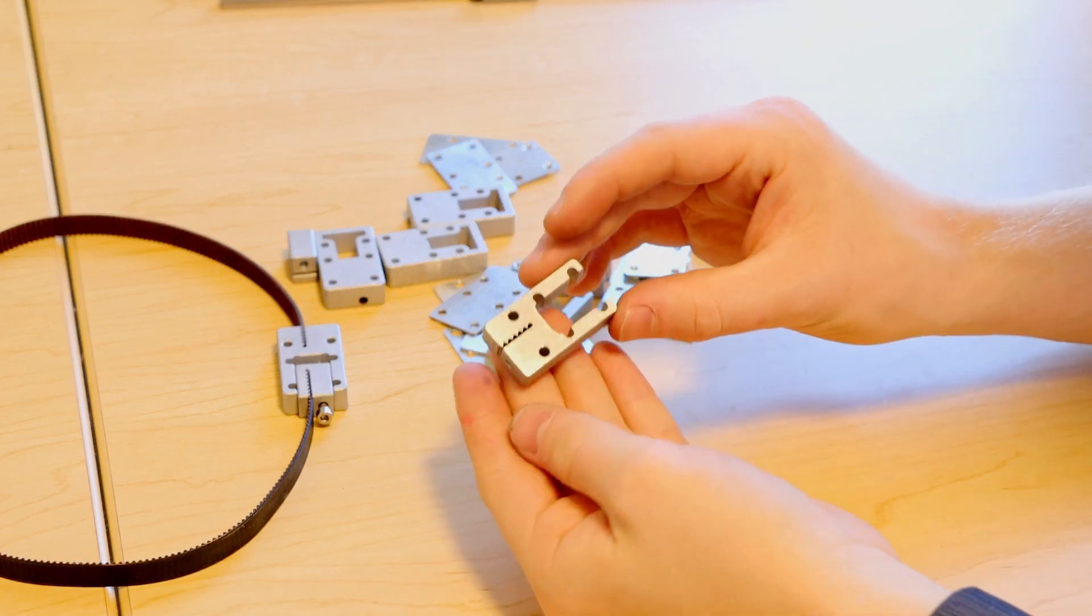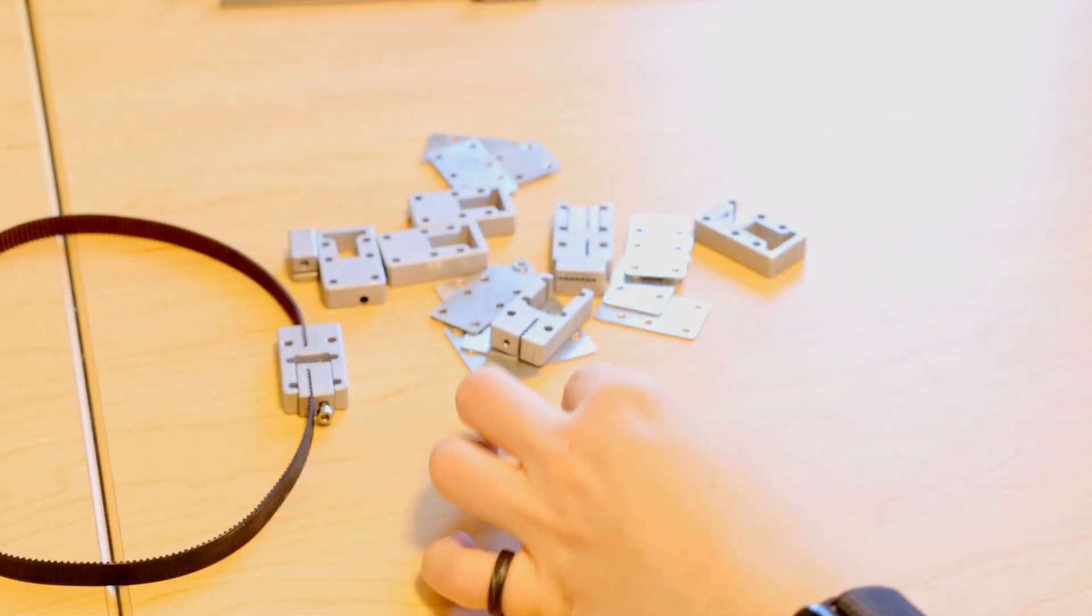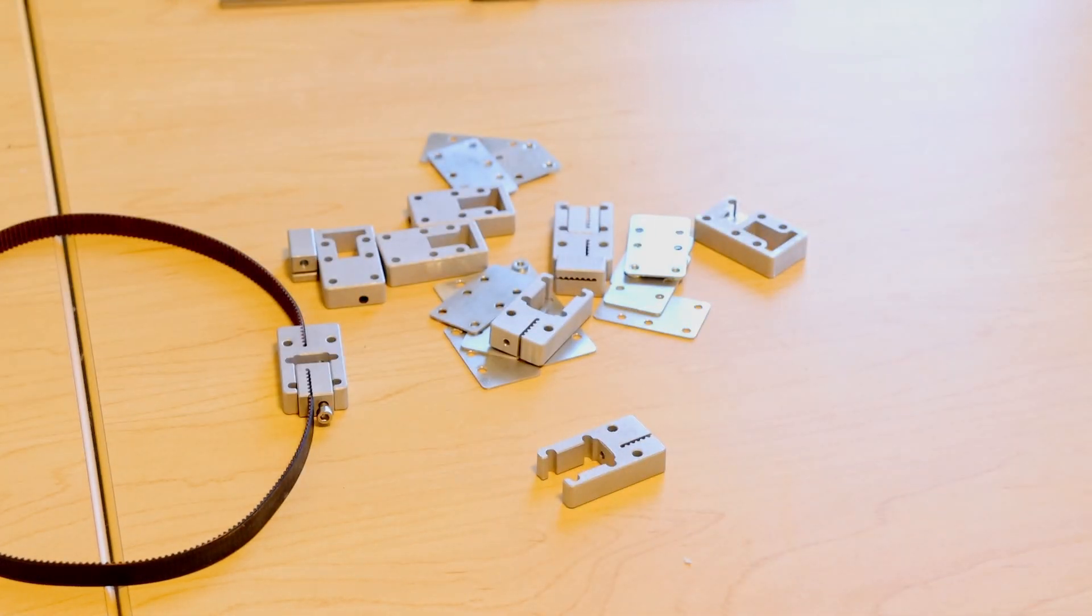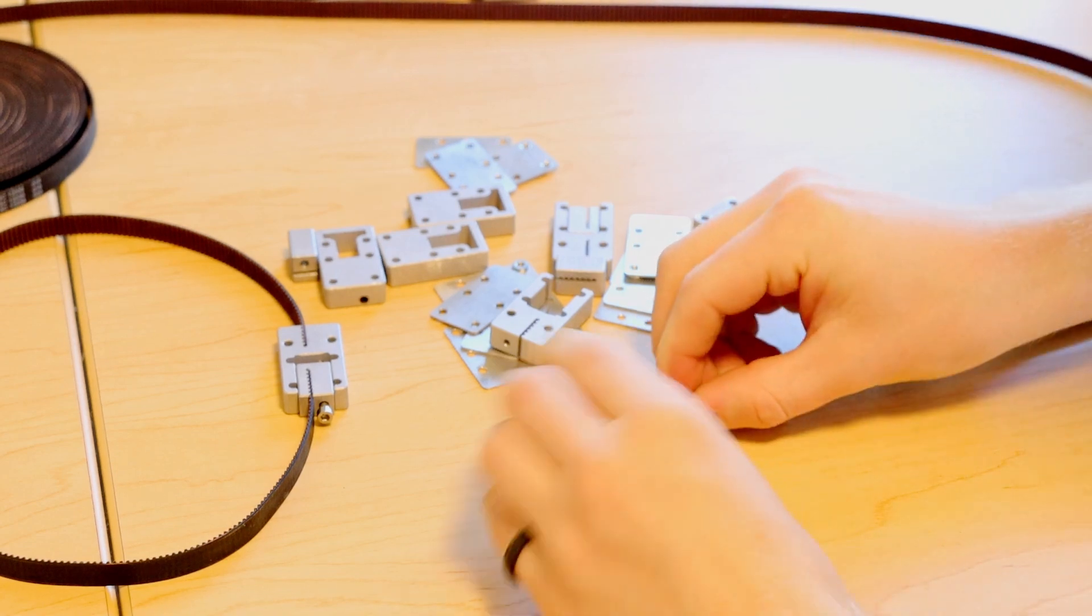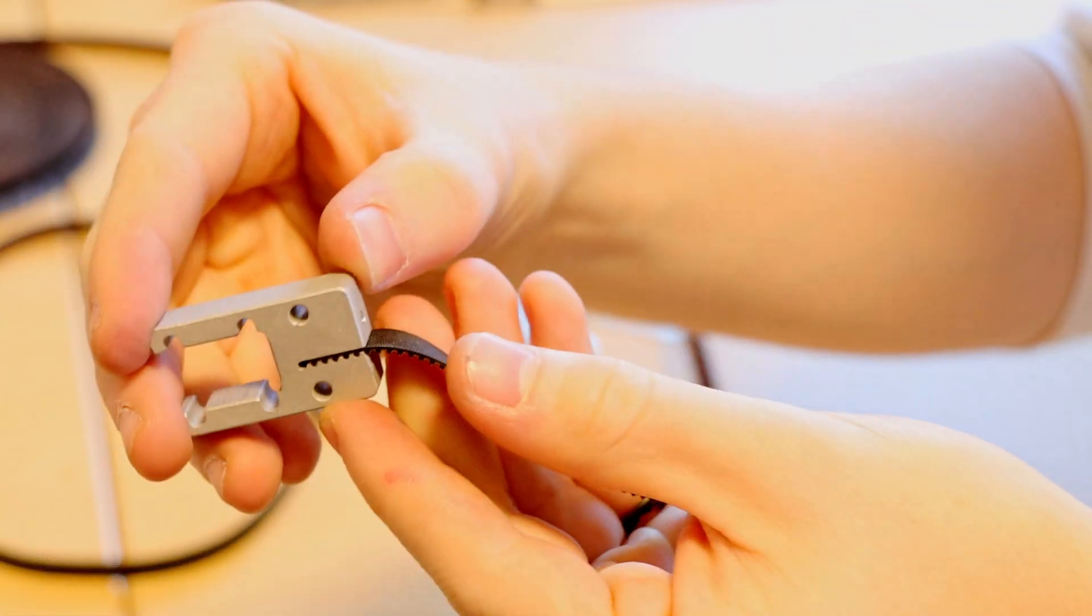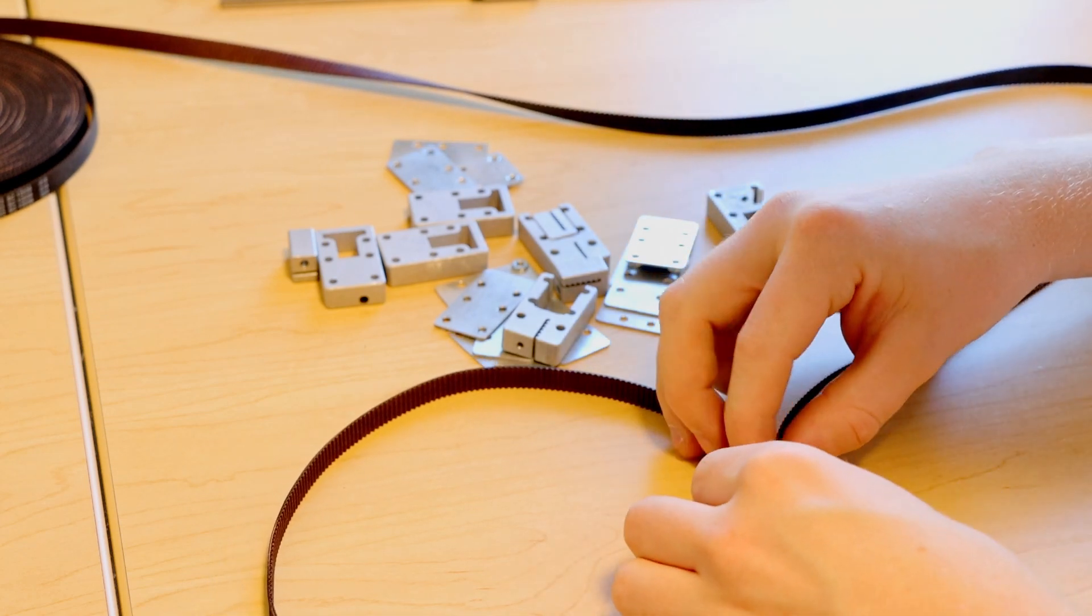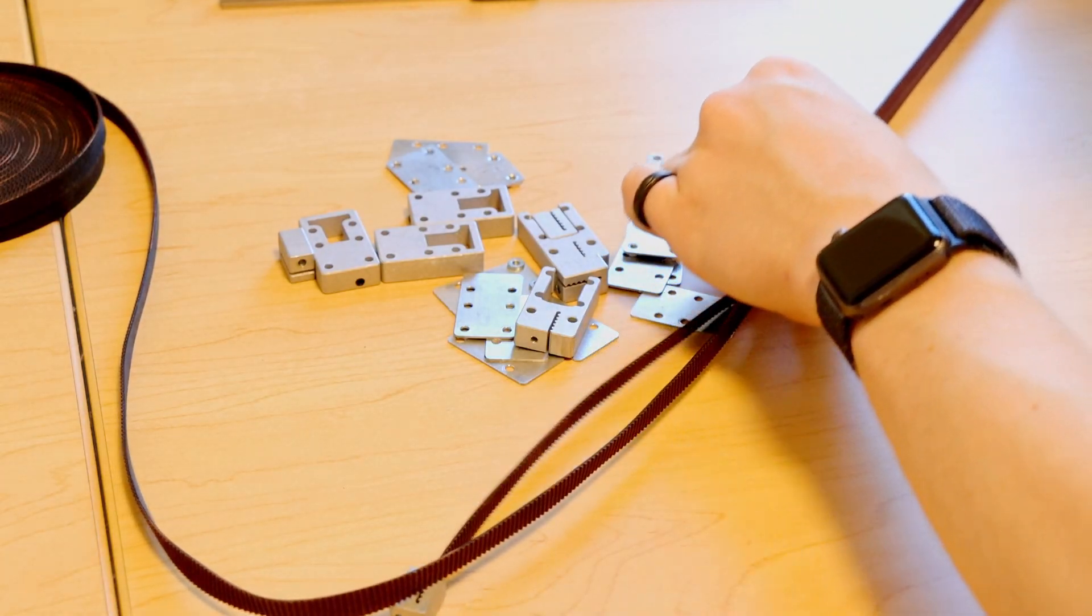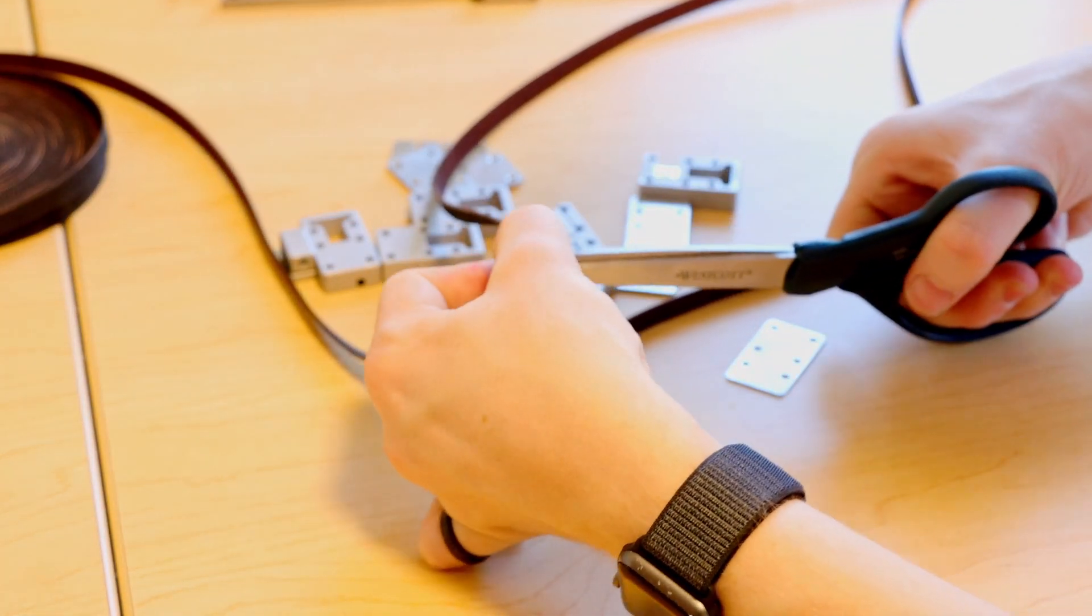I'm going to start by picking out the main side of the tensioner and then I'll take my belt and we just need to press the belt into the tensioner like that. Using the other one as a guide I can figure out how long I need to make this belt. So I've found the point where I need to cut. I'm going to go in with my scissors.